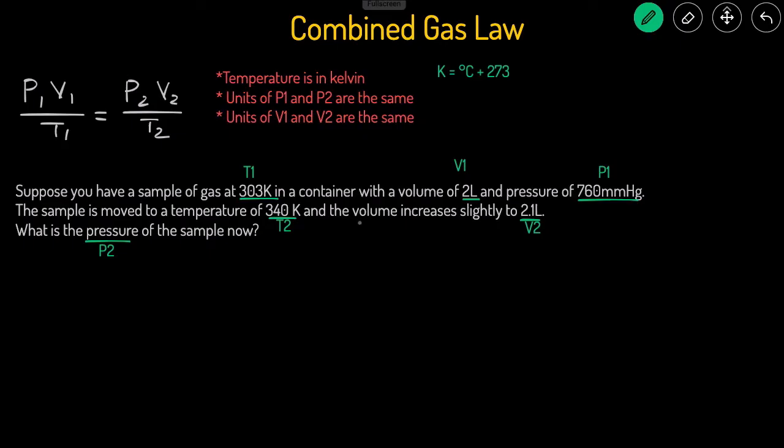Now that we've labeled all the variables, let's plug in the numbers into the equation. P1 is 760 millimeters of mercury. I highly recommend adding the units too, because then you'll catch yourself if the units are matching up and canceling out or not.